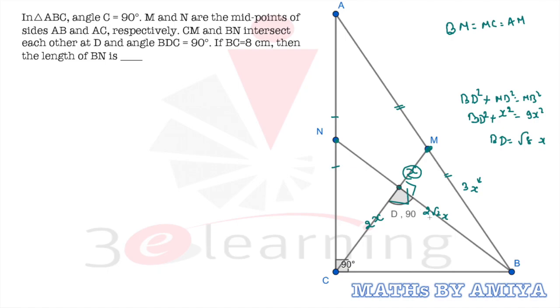And D is the centroid. It means if this one is 2 root 2X, this must be nothing but root 2X. 2 is to 1 ratio. And we need to find the BN. BN entire length is nothing but 3 root 2X. We got the value of X if by any chance we can solve the question. Here, the BC is given, so we can work in the triangle BCD.